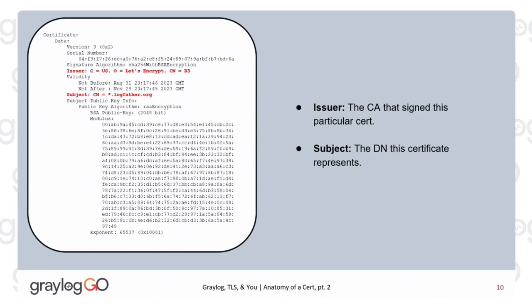There are other fields you can have as well: organization, organizational unit, localities — but all those fields are not required. The only required field is the common name, or CN.